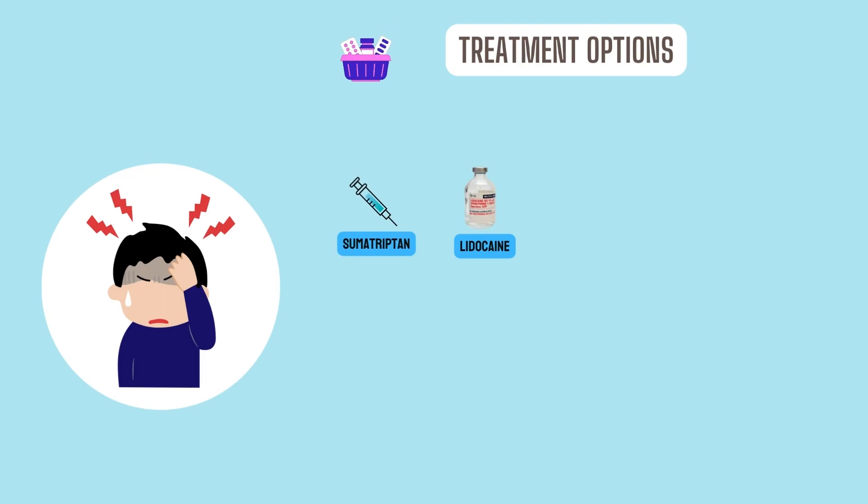Some medications are given to prevent future headaches. One type is a medication called a calcium channel blocker, such as verapamil. These drugs relax blood vessels.